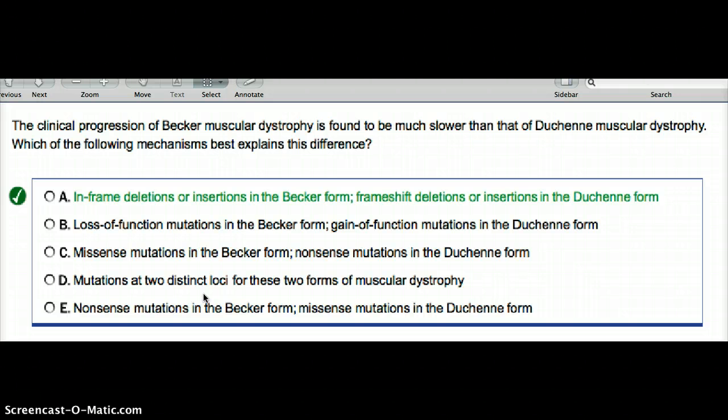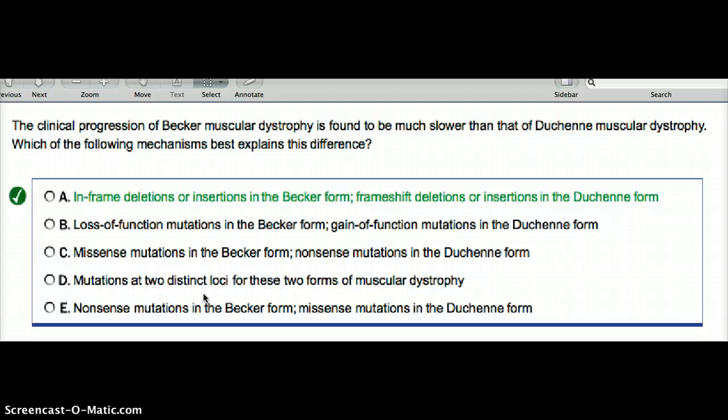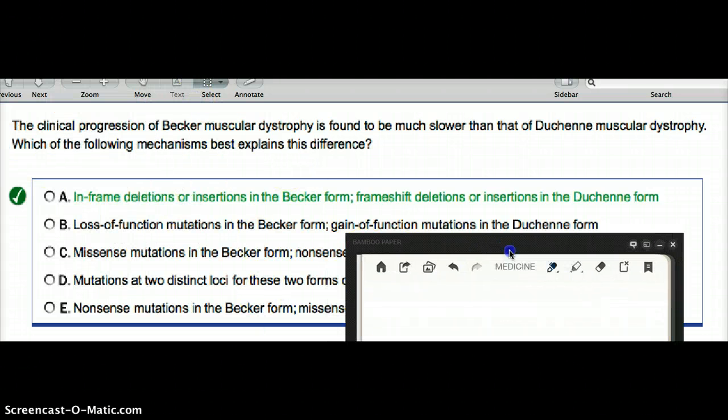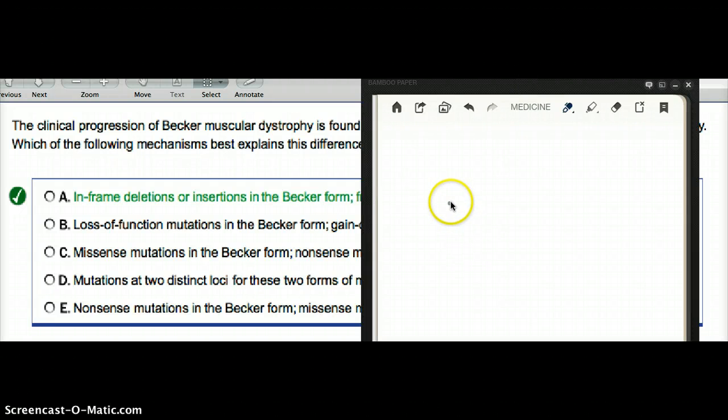They're saying why Becker has a slower progression than Duchenne. The reason for that is because whenever we are looking at Duchenne, Duchenne causes frameshift.